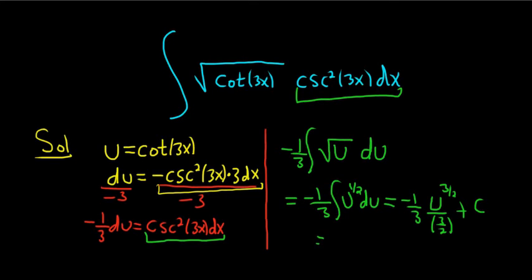When you divide by 3 halves, you really multiply by 2 thirds. So it's really 2 thirds times negative 1 third. And then u was cotangent. So we have cotangent 3x and the whole thing is to the 3 halves power. And we have our plus c.